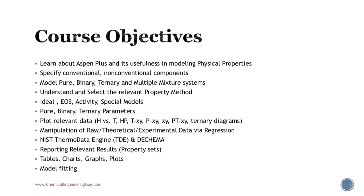We can model ternary systems — for instance, modeling air as nitrogen, oxygen, and argon, or a water-octanol-hexane mixture. We can also model multiple mixture systems, such as an alkane system containing methane, ethane, propane, butane, all the pentanes, and all the hexanes. We will understand how to model all of these systems.